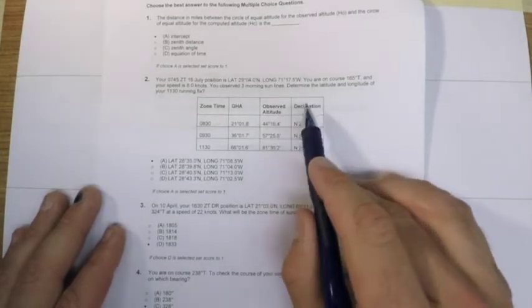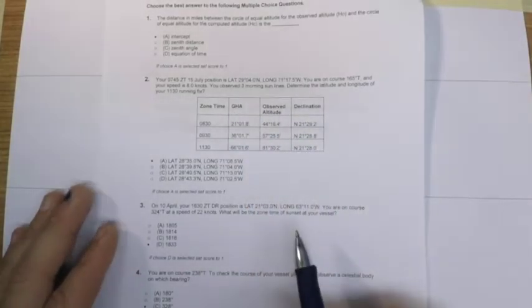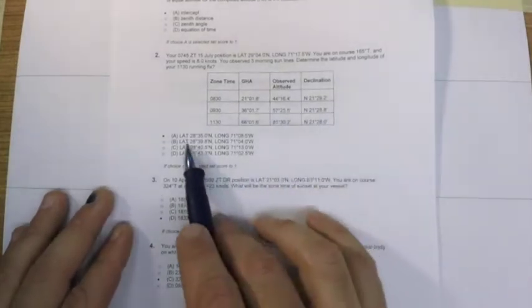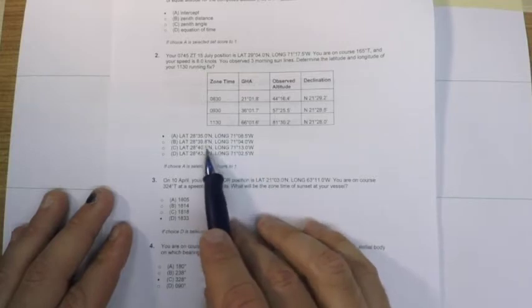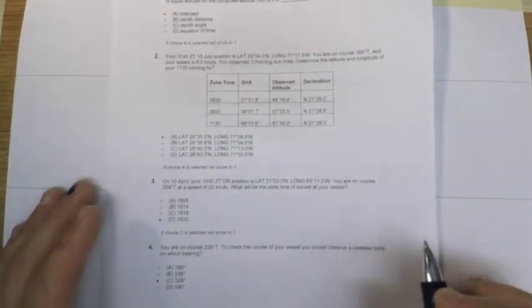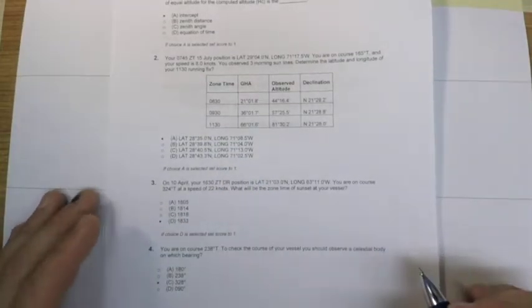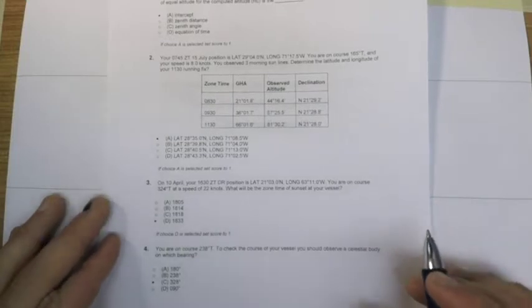Looking quickly at the answers we can see that the positions given are fairly far apart, like four or five miles apart, so our level of accuracy needs to be pretty good, but it's not going to be too hard to solve this problem.